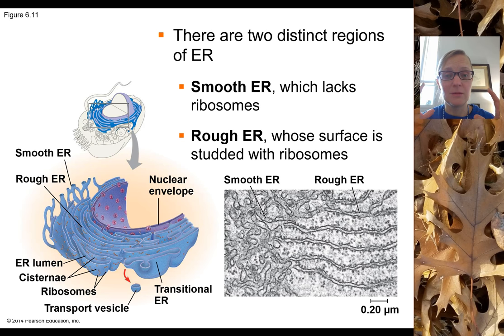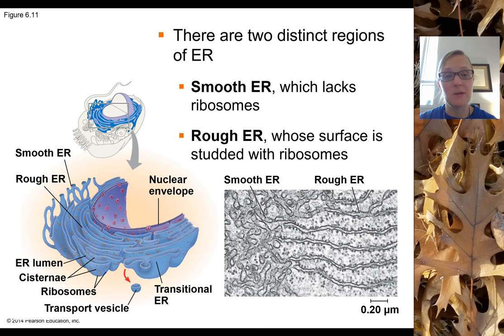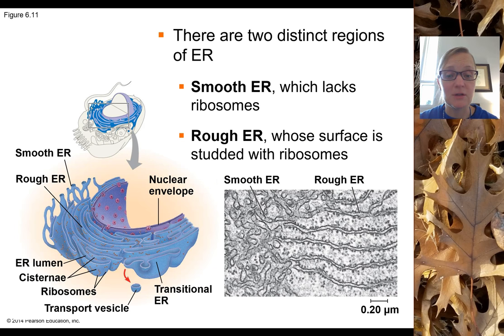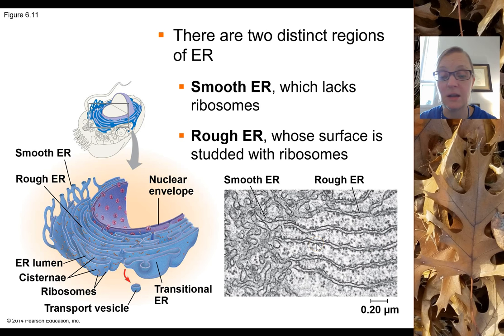The rough and smooth ER can be connected to each other, so materials can move easily between the two. It's all one big interconnected membrane, just with slightly different structures and with or without ribosomes. The electron micrograph shows the smooth ER as the more tubular structure on the left, and the rough ER as the flattened sacs with tiny black specks of bound ribosomes.